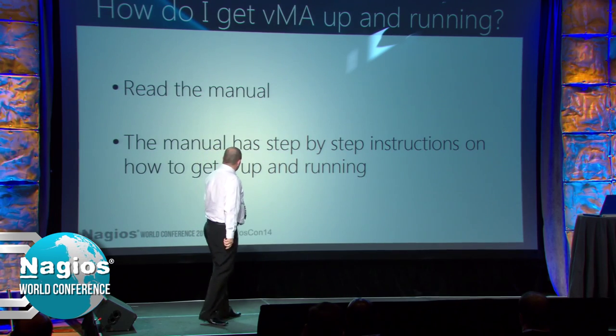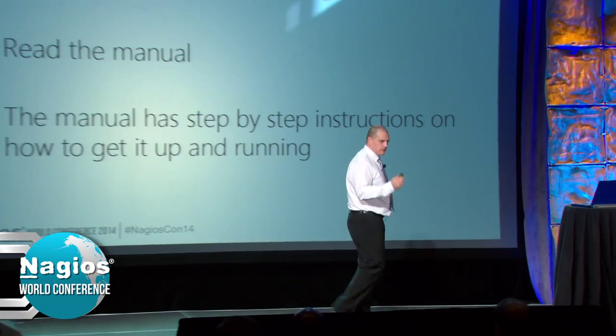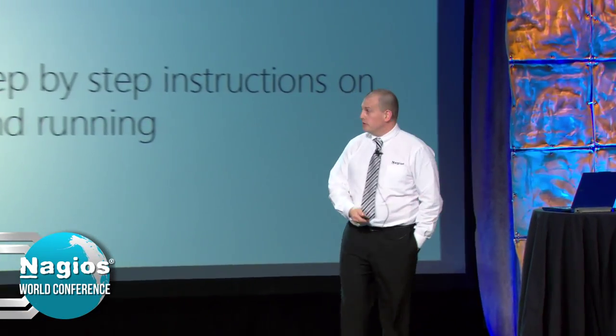How do I get it up and running? I'm not going to run through that here because it's very simple and it's in the manual. And when I say it's in the manual, it has step-by-step instructions: put it here, run this command, run this command, do this on the Nagios host, set up your SSH connection, test it, does it work? Okay, now proceed to the next step. That's one of my other goals of the plugin - to have a manual that was easy to understand and make it easy for you guys to implement.